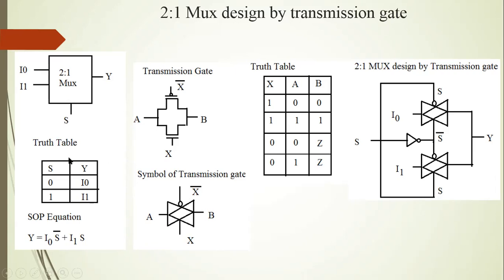Truth table of the 2-to-1 MUX: when logic 0 is applied on the select line, then i0 input is selected; when logic 1 is applied on the select line, then i1 input is selected. The SoP equation for the 2-to-1 MUX is: Y = i0·S̄ + i1·S. When S is 0, i0 is selected; when S is 1, i1 is selected.